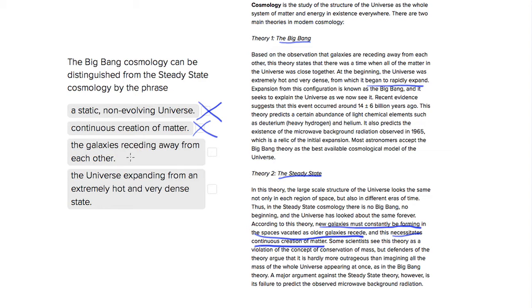The idea of galaxies receding away from each other—as we see in the steady-state theory, older galaxies recede, and also in the Big Bang Theory, galaxies are receding away from each other. So that's not going to be correct because it's in both passages.